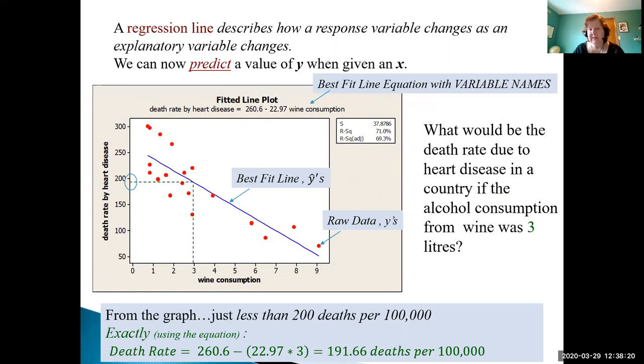Note it does have the variable names. We have the response variable name and the explanatory variable name. It's not good practice in statistics to use x and y because the first question people will ask you is what's x and what's y. We then have the slope of the equation, -22.97, and also the intercept of the equation, 260.66.